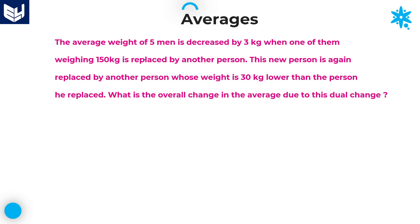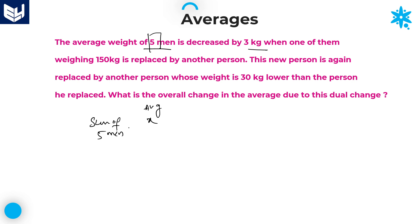This problem is also very important — listen carefully. The average weight of 5 men is decreased by 3 kg when one of them weighing 150 kgs is replaced by another person. Let us consider the initial average as x. As there are 5 members in the group, the sum of those 5 men is equal to 5 into x.